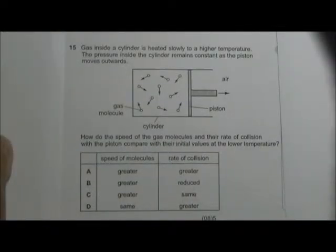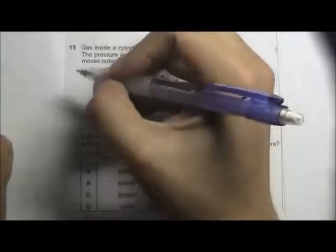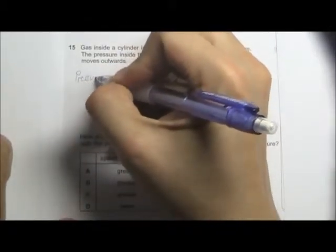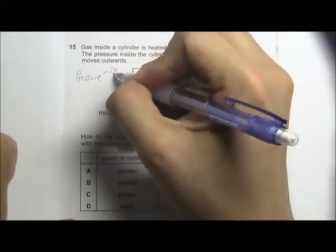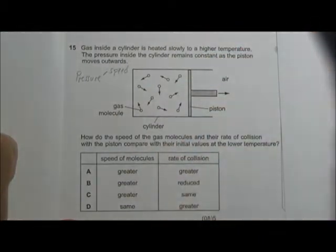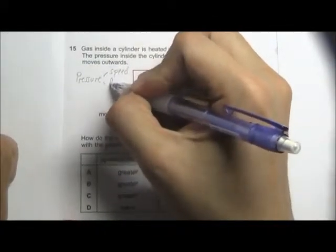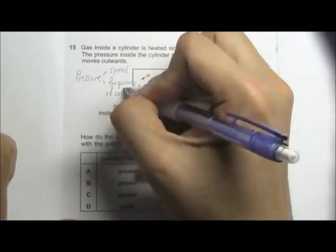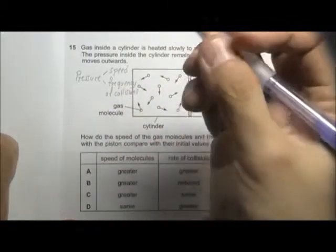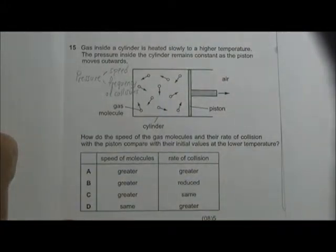To answer this question we have to look at the two factors that affect pressure. Pressure of a gas depends on two factors. The first one is the speed of the molecules. Of course, the faster the gas molecules move, it will hit the wall with a greater force and create a larger pressure. And the second factor is the frequency of collision. The more collisions there are, the larger force acting on the wall, then the pressure will be higher.